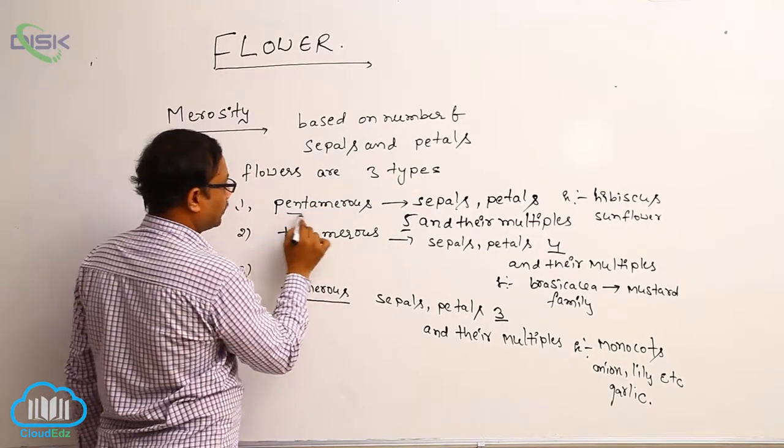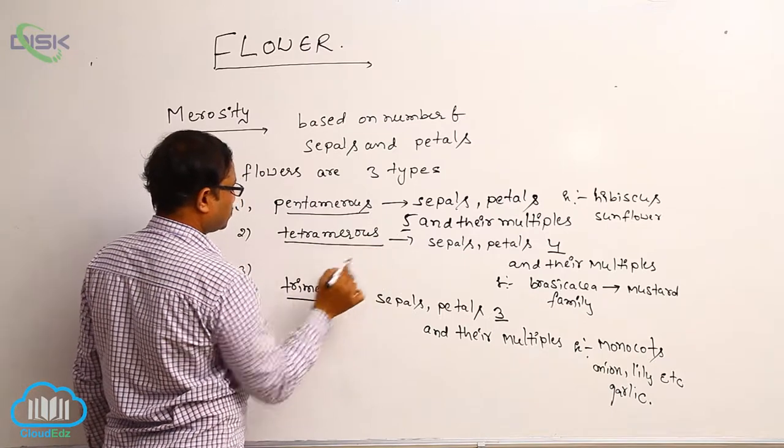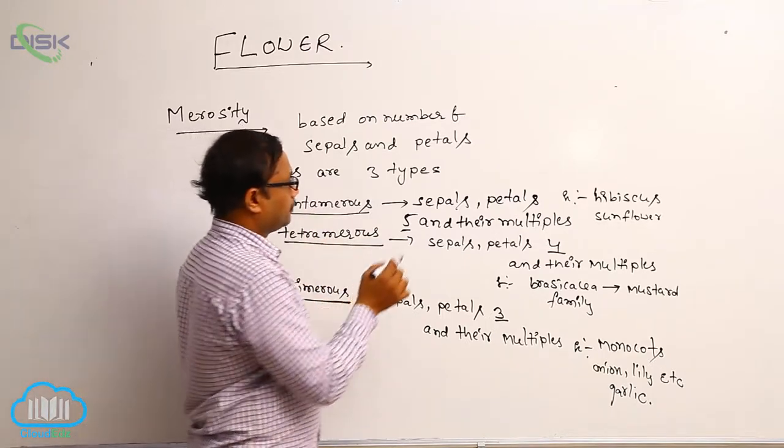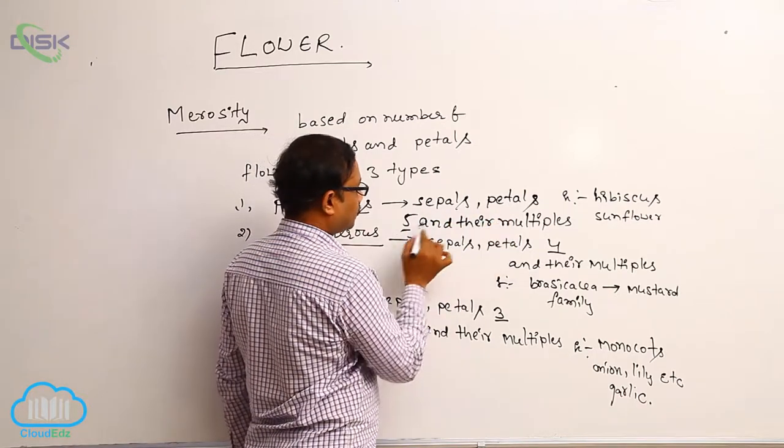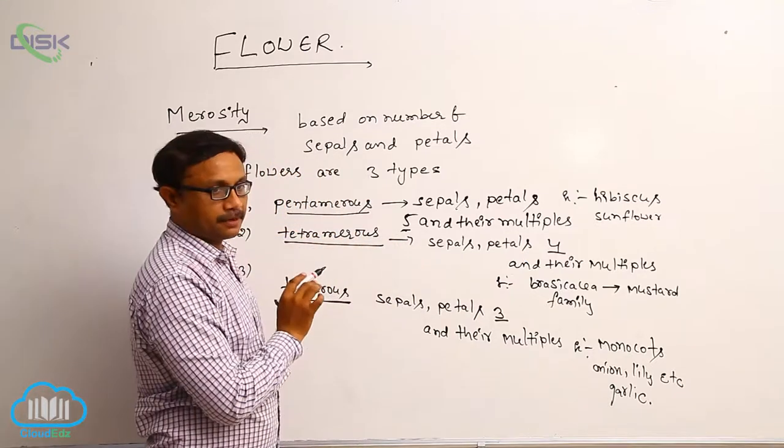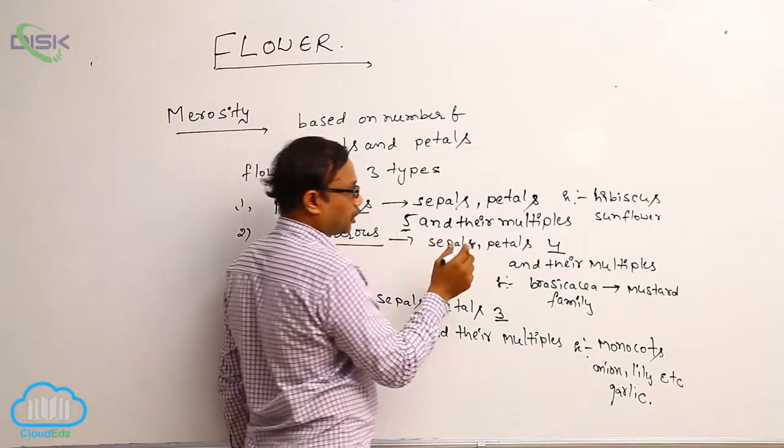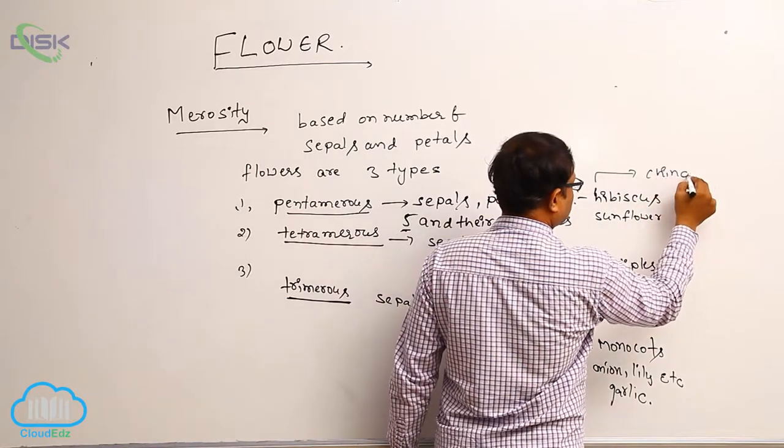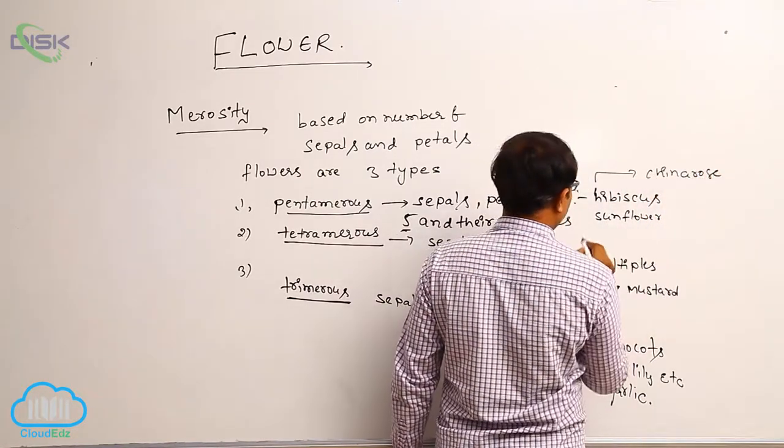Pentameras. Pentameras means if sepals and petals five and their multiples. That is known as pentameras. This pentameras example, hibiscus. Hibiscus means it is a china rose. Most of the dicot plants.